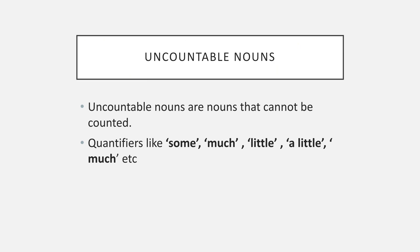Next, uncountable nouns are nouns that cannot be counted. For example, we can say 'some water is in the glass' or 'there is not much water in the glass.' The quantifiers little, a little, and much are used with uncountable nouns.